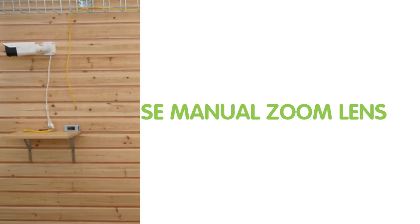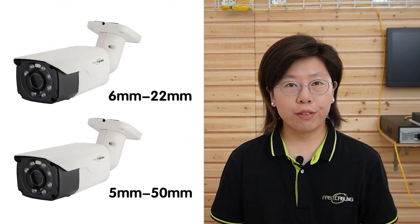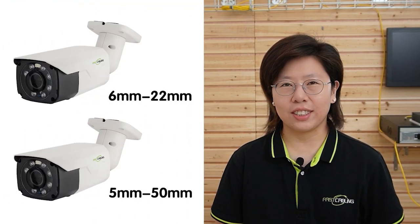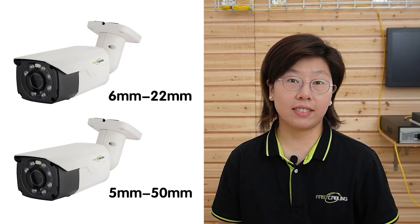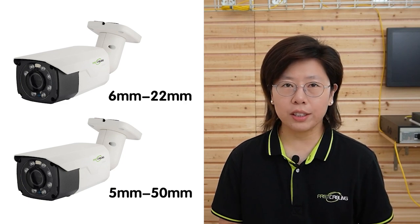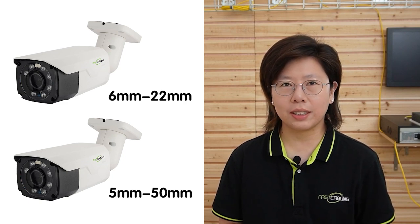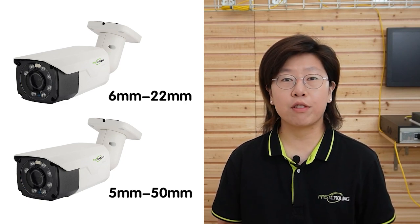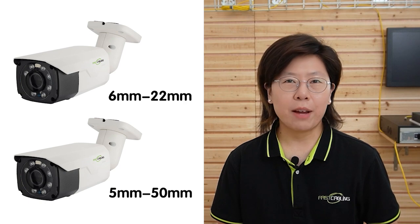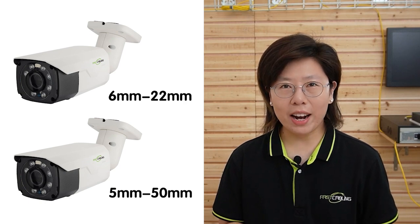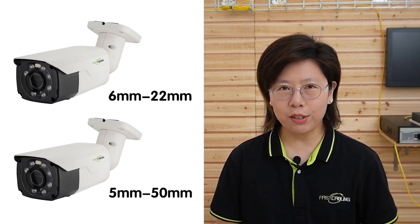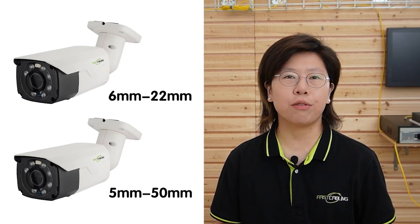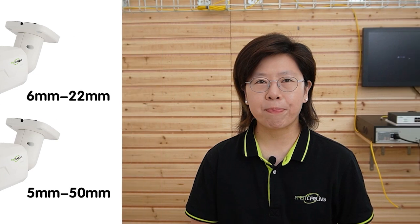Now I'm going to introduce you to cameras with manual zoom lenses. They're available with different lens ranges, such as 6-22mm and 5-50mm, providing a wide range of focal lengths to suit various civilian requirements.